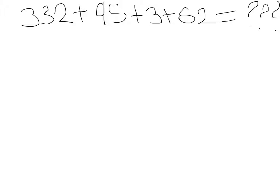Three hundred and thirty-two plus ninety-five plus three plus sixty-two equals a mystery number.